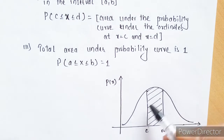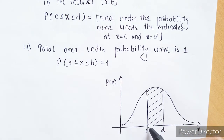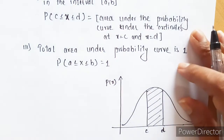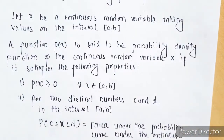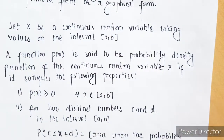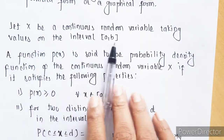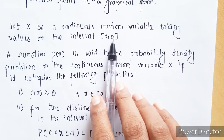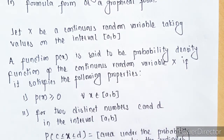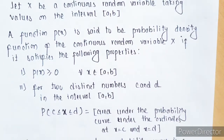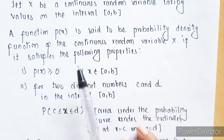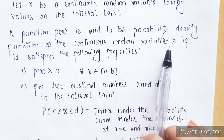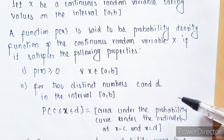So this area is nothing but the probability distribution for this particular function from interval C to D. We are taking values from the interval in case of a continuous random variable, whereas in case of a discrete random variable we are taking a particular point. A function P(x) is said to be the probability density function of a continuous random variable x if it satisfies the following properties.